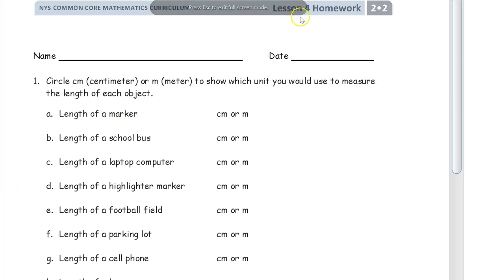Welcome to the homework for Lesson 4 of Grade 2, Module 2. Get your name on here first so you don't forget it later. You want to get credit for all your work. And we're starting off with circling centimeter. CM is the abbreviation for centimeter, or M for meter, to show which unit you would use to measure the length of each object.